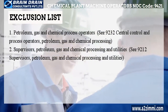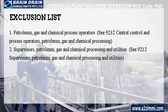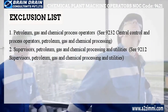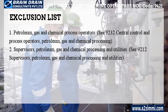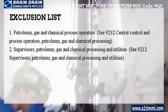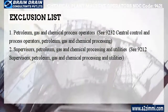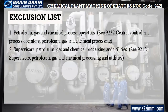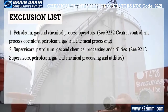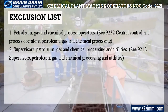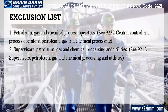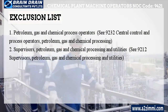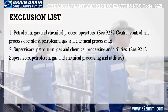The exclusion list includes: Petroleum, Gas and Chemical Process Operators — NOC 9232, Central Control and Process Operators, Petroleum, Gas and Chemical Processing — NOC 9232, Supervisors Petroleum, Gas and Chemical Processing and Utilities — NOC 9212.